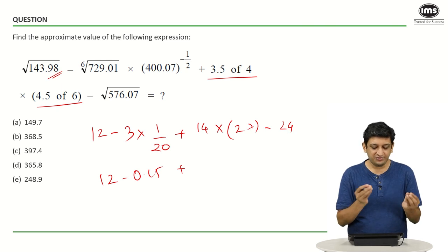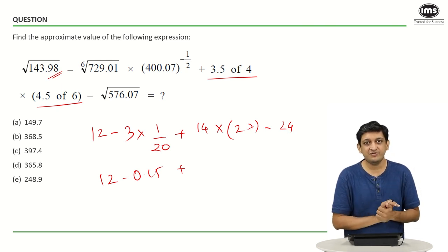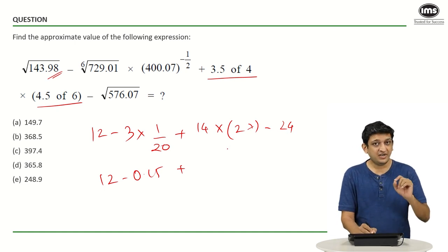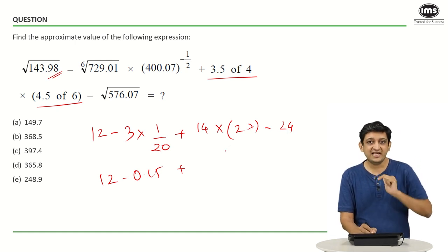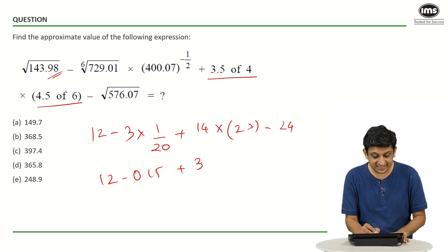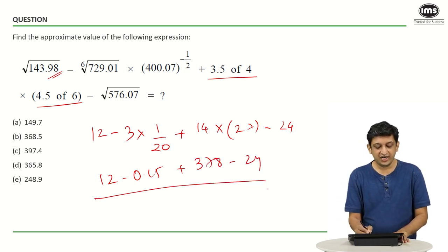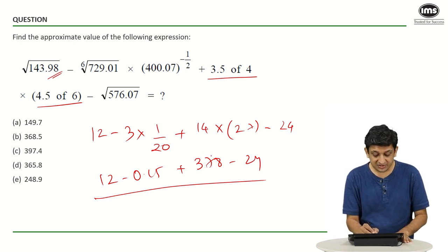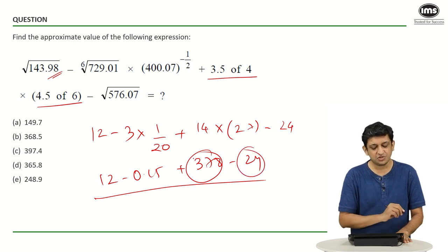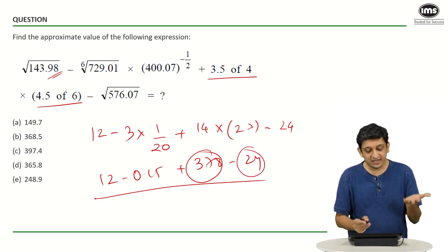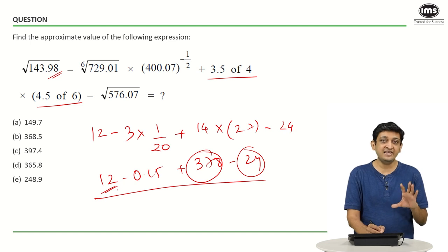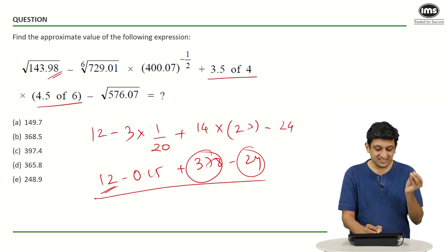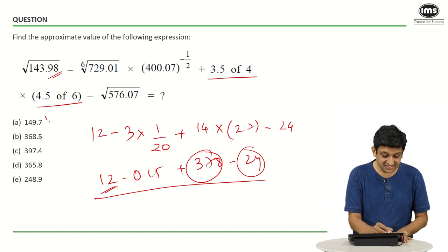So what we have is 12 minus 3 multiplied by 1/20, which is 0.15, plus 14 into 27. Now 14 twos are 280, and 14 sevens are 98 — so 14 into 27 is 280 plus 98, which is 378. Then minus 24. Adding and subtracting: 378 minus 24 is 354, plus 12 is 366, minus 0.15 gives approximately 365 point something.